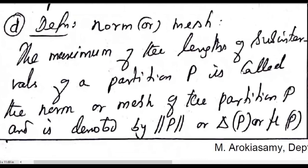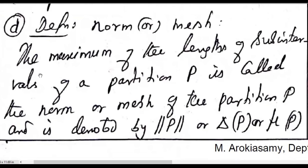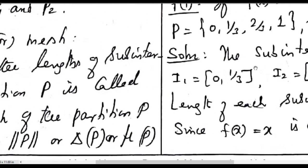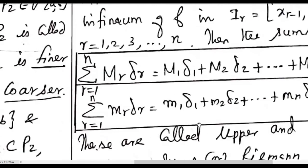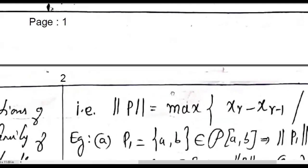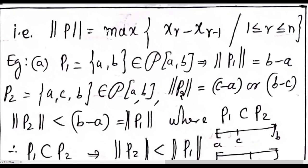Now we define the norm or mesh of a partition. The maximum of the lengths of the subintervals of a partition P is called the norm or mesh of the partition P, denoted by ‖P‖ (also written as δ(P) or μ(P)). That is, ‖P‖ = max{x_r − x_{r-1}} for r = 1 to n.